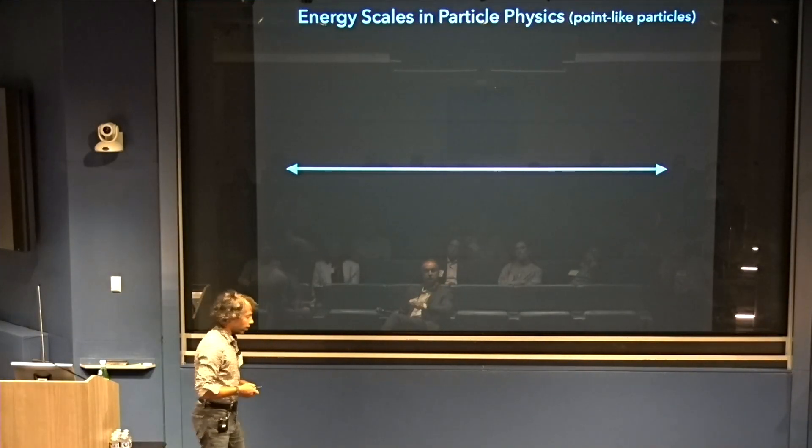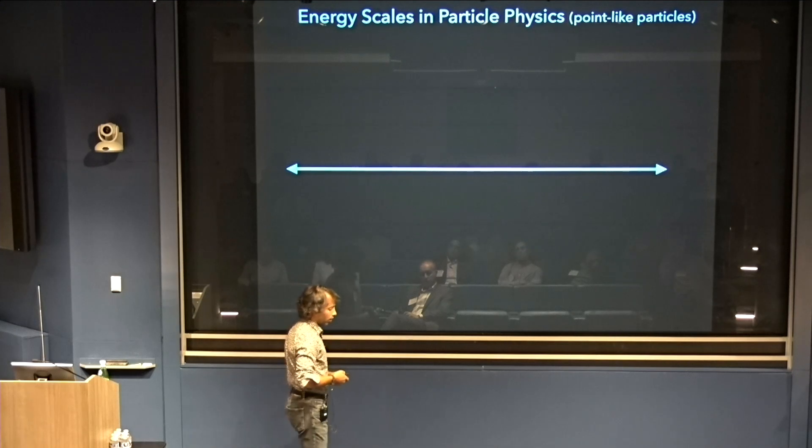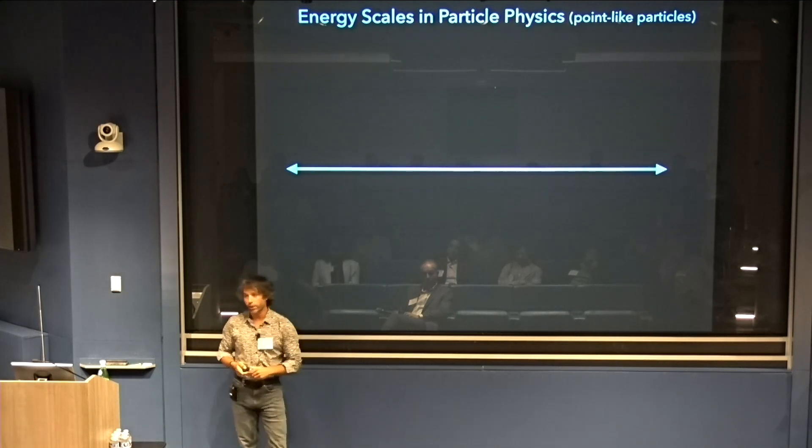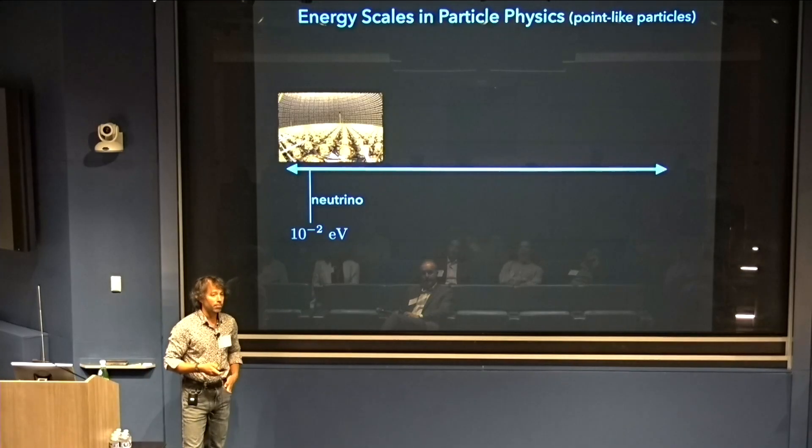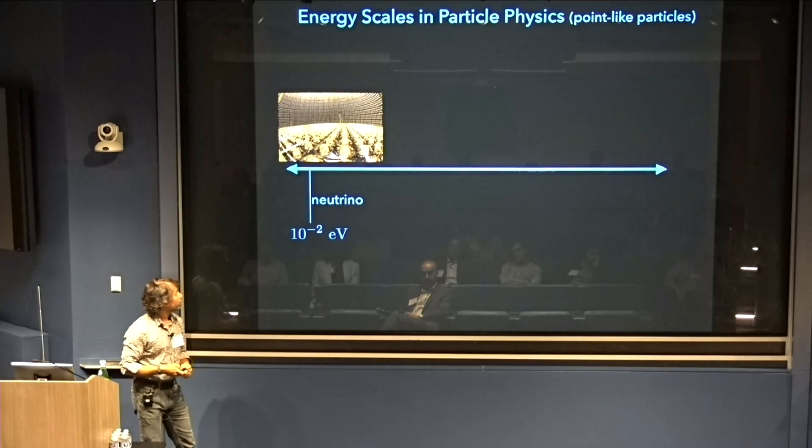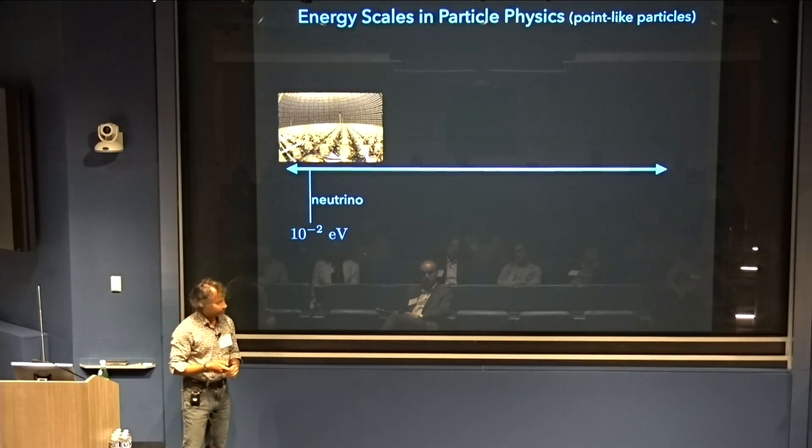Before I get started, just to orient everybody, let me talk briefly about energy scales in particle physics. The lowest mass but non-zero mass particle that we have in the standard model are the neutrinos with masses on the order of 10 milliEV.